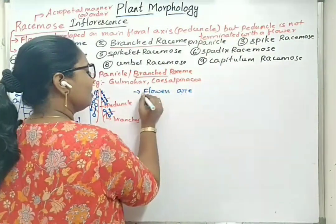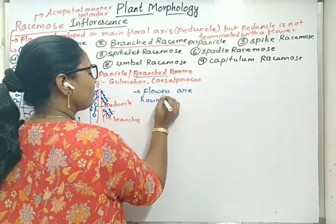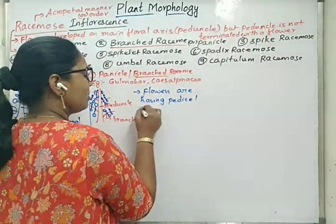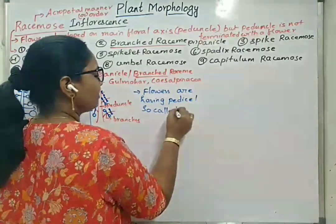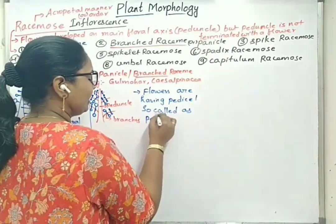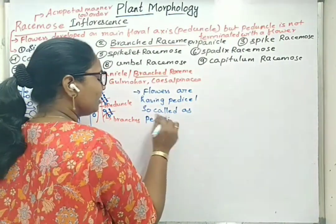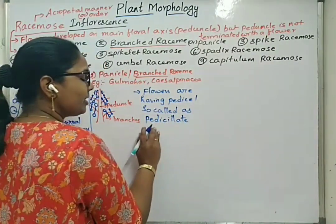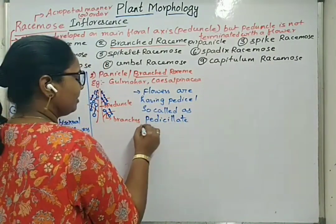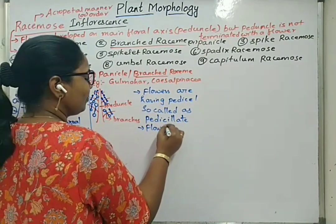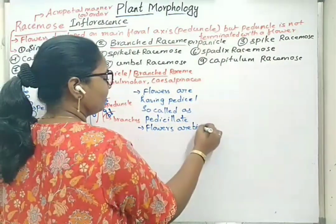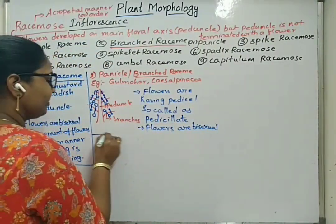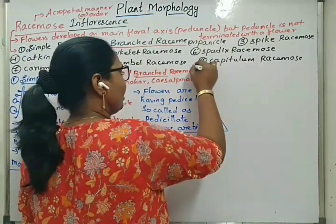Flowers are pedicillate, meaning they have a pedicel or stalk to hold. If they simply say pedicillate, that is also correct. Flowers are bisexual. This type is seen in case of Caesalpinia family members and Gulmohar.